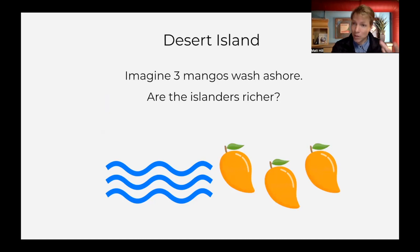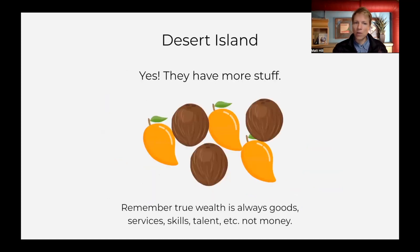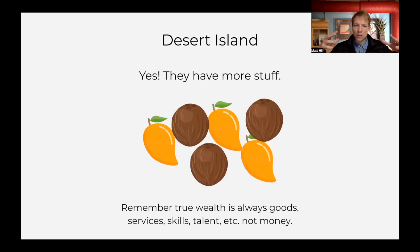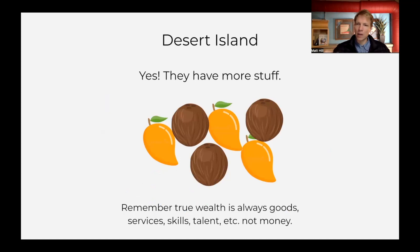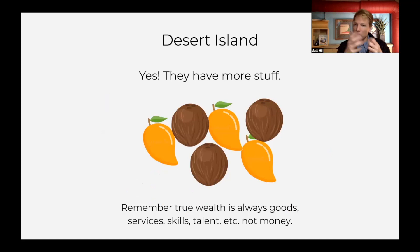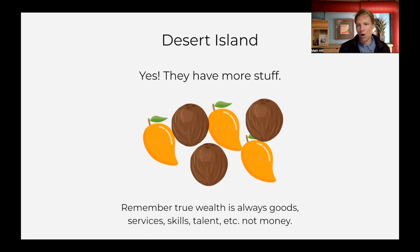And it's not like the things are more valuable because the price went up — it's just that there's more money. Now, if we actually get more stuff — if three mangoes wash ashore — then we actually are richer. Going back to what true wealth is: true wealth is always goods, services, skills, talent, tangible things. Money just allows us to trade those things. Money has no value in and of itself; it's not wealth in and of itself. It just allows you to trade for things that are actually valuable.